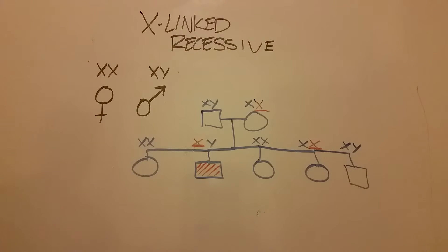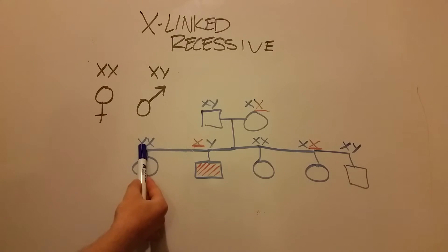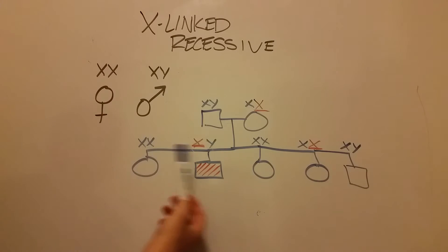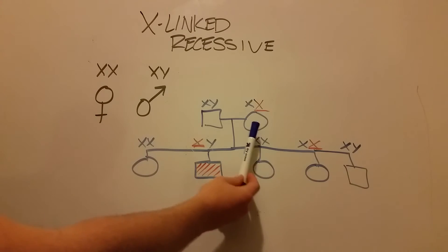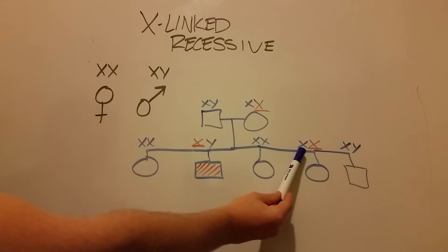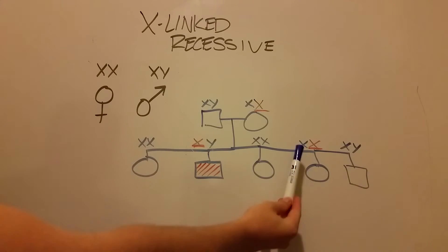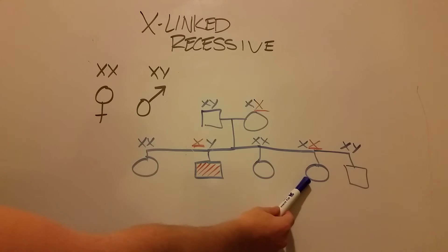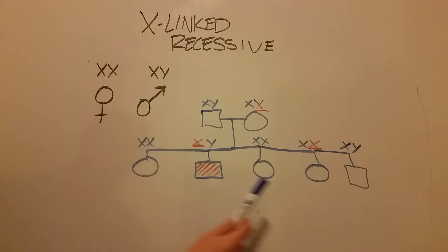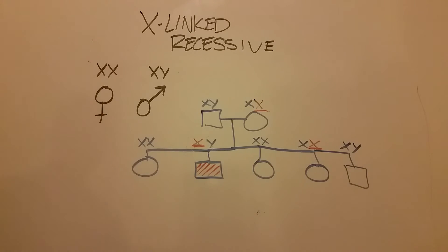Another thing to note is that two of his sisters received a wild-type X from both father and mother, so they're not affected. Another sister is the exact same way. However, this one sister, just like her mom, received the wild-type X from her dad and the affected X from her mother. So she might go on to have a situation just like her mom — having an affected son.